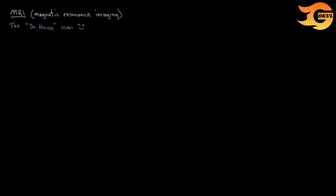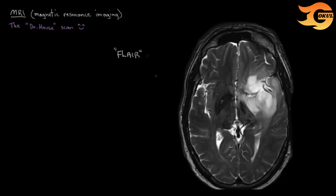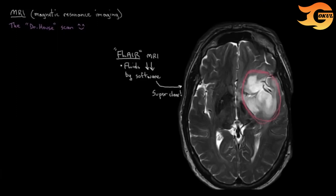The last image is another type of MRI called FLAIR MRI, in which pictures of the brain are taken but computer software removes any fluid from showing up in the final image. What you end up with is a super clear image of just the brain tissue. In this high-resolution, crisp FLAIR image, you can see there's a lesion — some damage happening in the left half of the brain. So those are some of the more important imaging tests in a stroke workup: CT, angiography, and MRI.